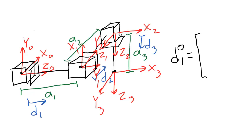What will happen when this joint variable moves? In the last video, we saw a case where the direction of the displacement changes as the joint variable changes its value — but that was the case of a revolute joint. When we have a prismatic joint, the direction of the displacement never changes. We can see that it will not change here — there is no rotation. So the displacement between frame 0 and frame 1 is 0 in the x0 direction and 0 in the y0 direction.